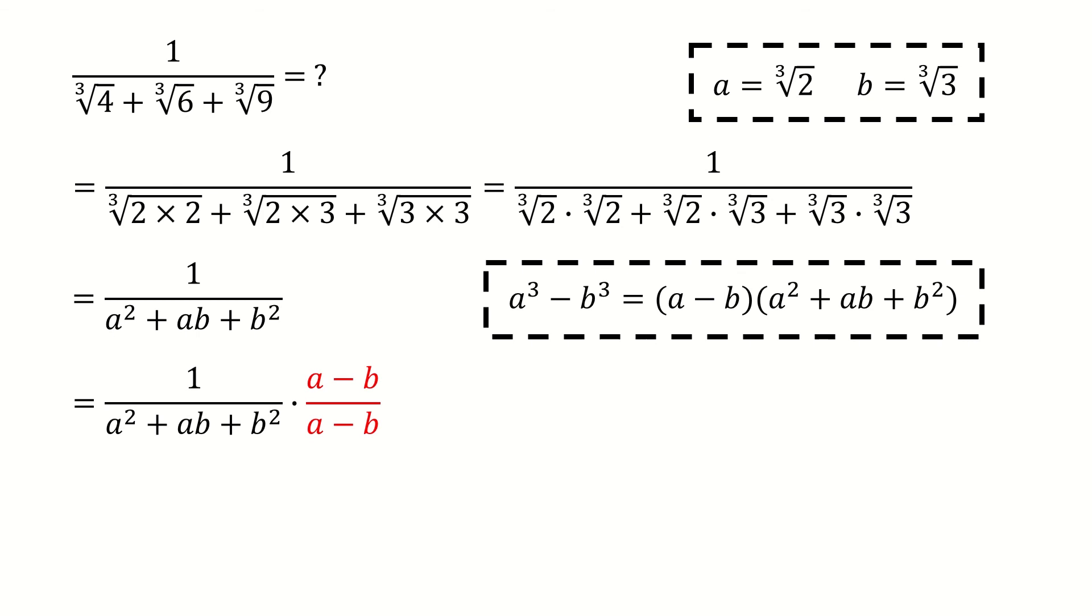And then we just multiply a minus b and divide a minus b. In this case, the denominator can be written as a cube minus b cube. And then we just plug in the numbers. And we got the final answer. So we are done.